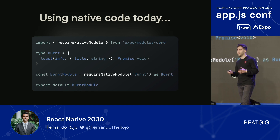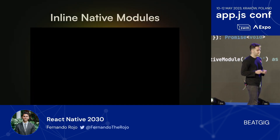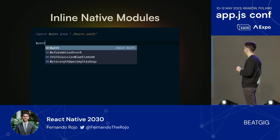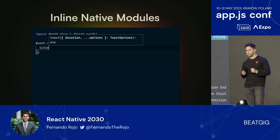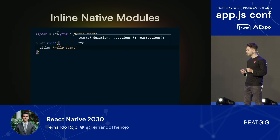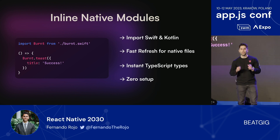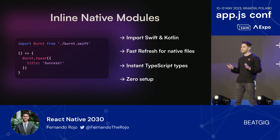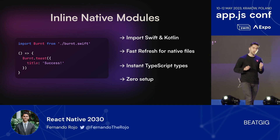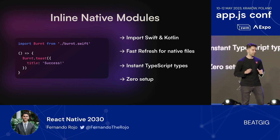Now, this is pretty good. If you ever try to write a native module without Expo modules, you know that the list is a lot longer. But in the future, it'll be even easier with the introduction of inline native modules. Notice that I'm importing Burnt from a Swift file, and I can call its functions with types right in my JavaScript code. With inline native modules, you can suddenly import Swift and Kotlin files right alongside your React code. You don't need separate folders — it lives right in the same place. And while it doesn't technically use fast refresh, whenever you update a native file, your native app will automatically recompile, and it'll be so fast that it feels like fast refresh.